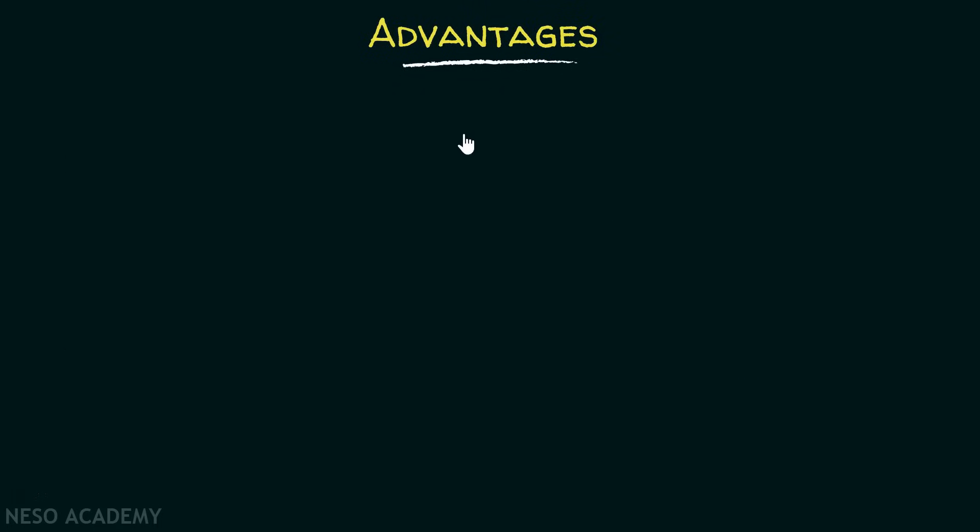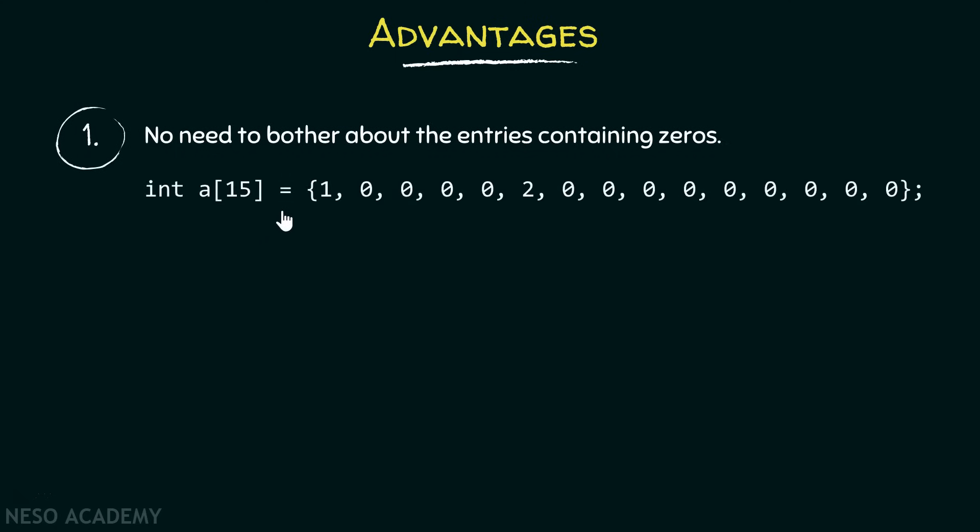There are certain advantages of this way of initialization. There is no need to bother about the entries containing zeros. If suppose we have an array like this in which there are numerous number of zeros, and only at two positions we have values other than zeros, then you can simply write this array like this.